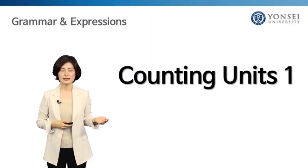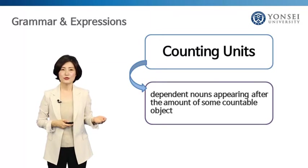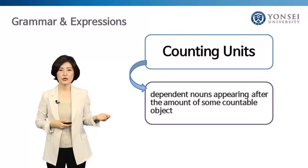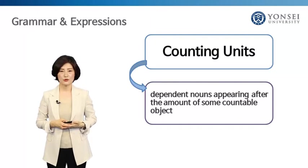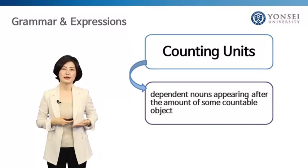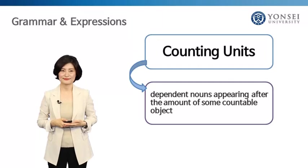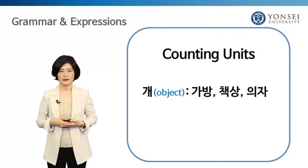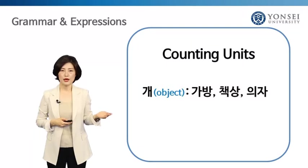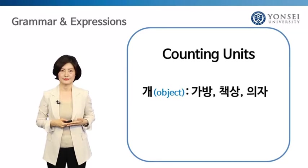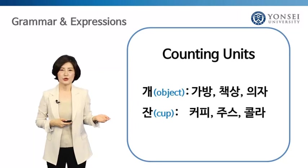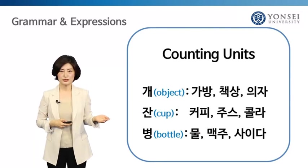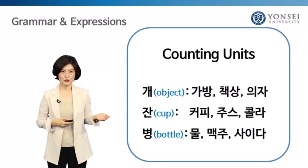Today you will learn some counting units in Korean. Counting units are dependent nouns that appear after the amount of some countable object. By dependent nouns, we mean the noun cannot be used alone and is always preceded by other words. There are many counting units in Korean. Today we will study the most commonly used ones: 개, 잔, and 병. 개 is used to count things like 가방, 책상, or 의자. 잔 means cup in English, so we use it with 커피, 주스, or 콜라. 병 means bottle and we use it to count things like 물, 맥주, or 사이다.